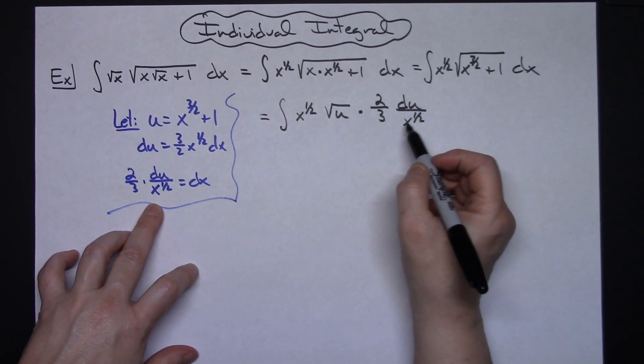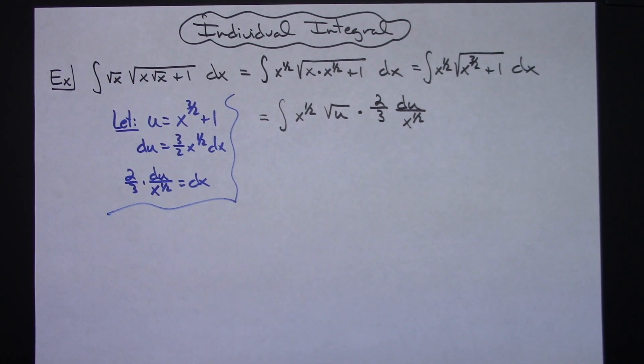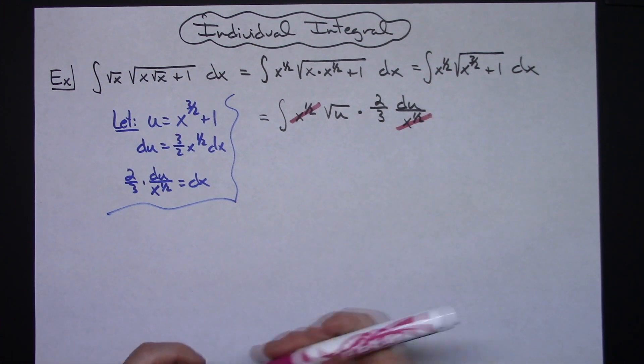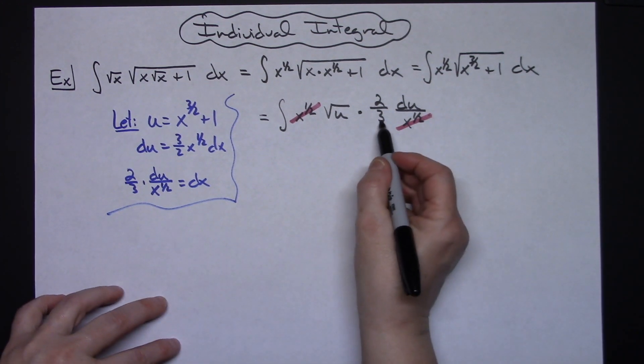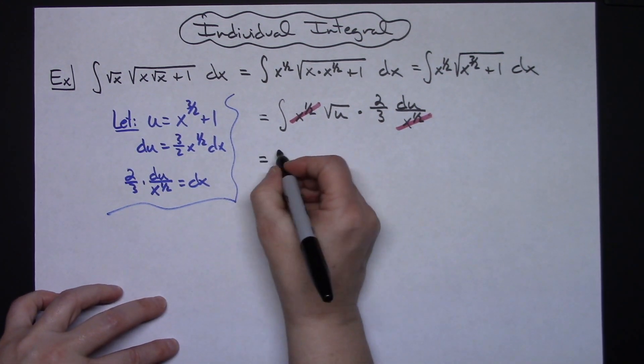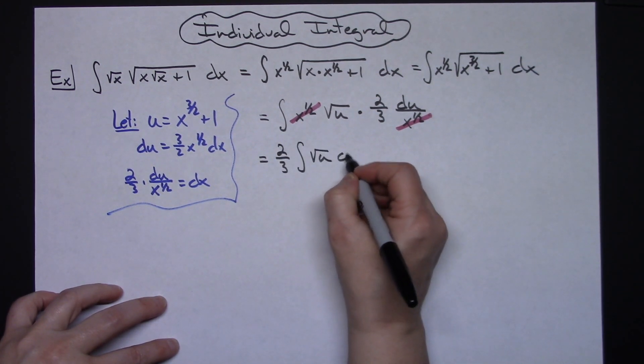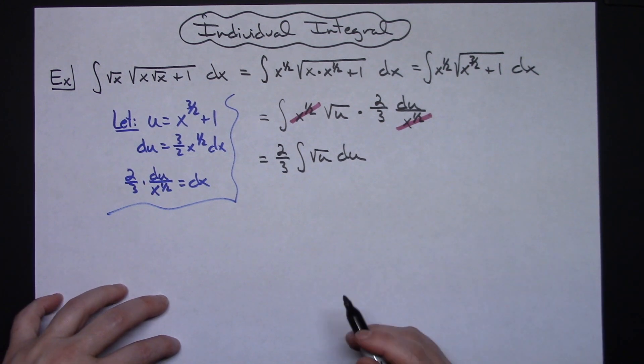I was thinking about putting it back in square root but I don't need to do that because now then those x to the 1 halves are going to cross out and I'm going to be able to pull that 2 thirds out in front. So I'll have a 2 thirds times the integral of the square root of u du and then that is a pretty straightforward integration.